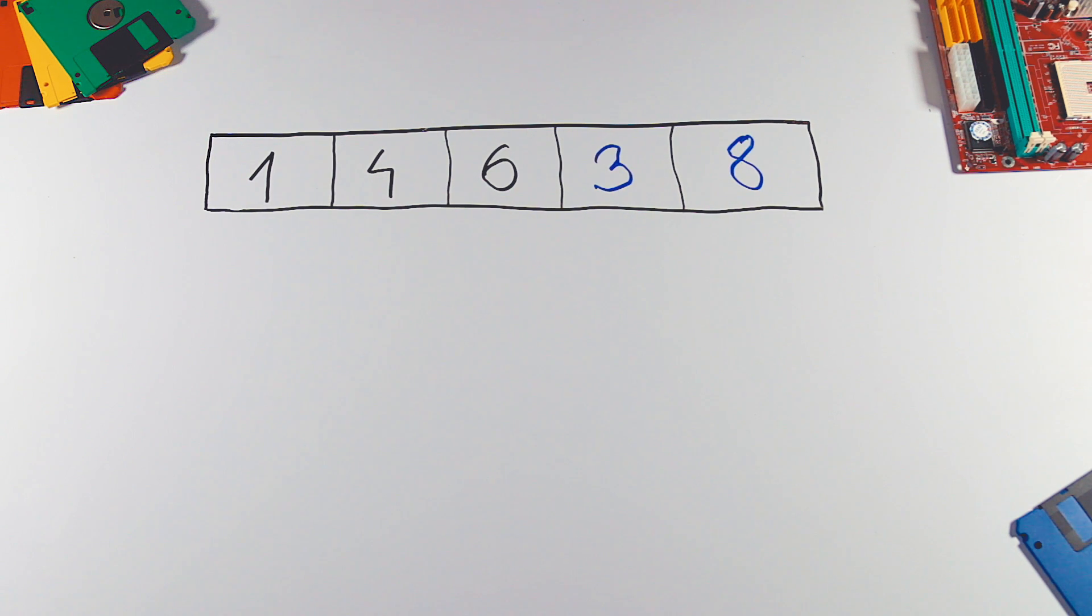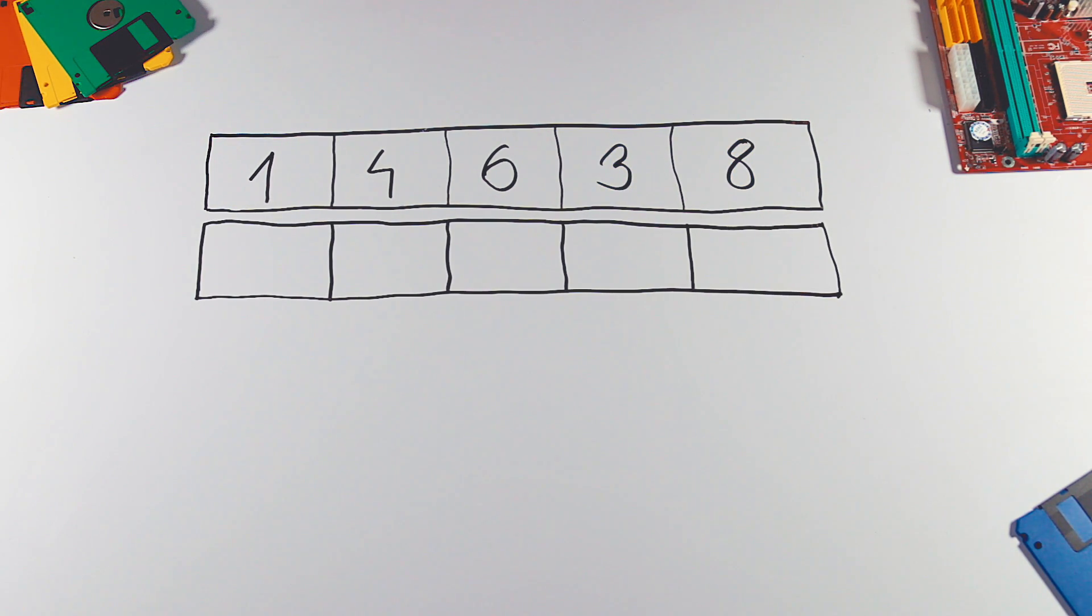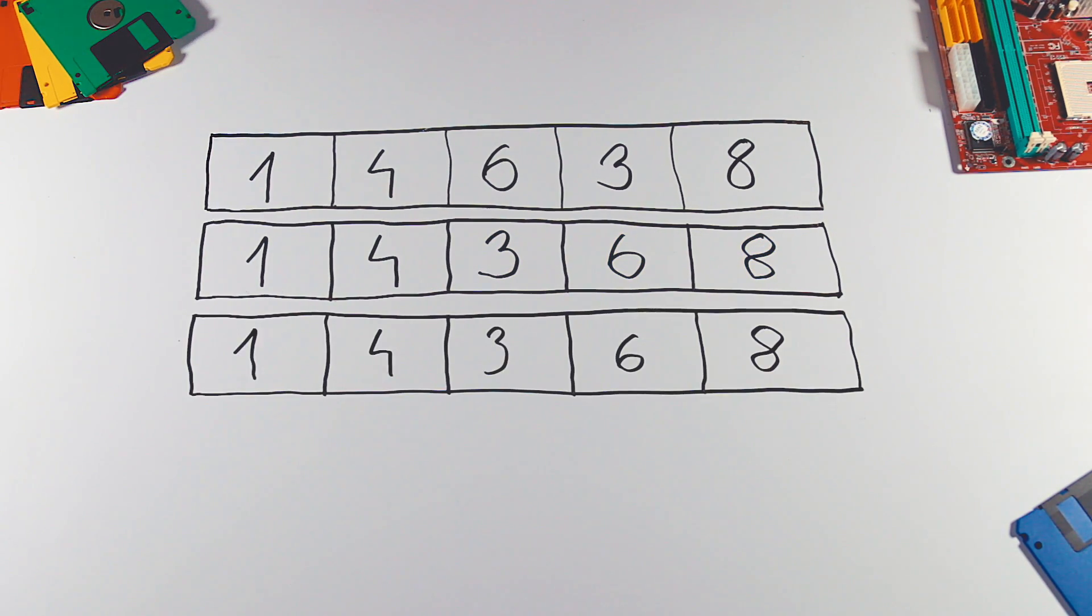This was the first iteration, now let's continue with the second one. Again we start at the left and we compare each pair. If the first number is greater than the second one, we swap them. And the same goes for the third iteration.